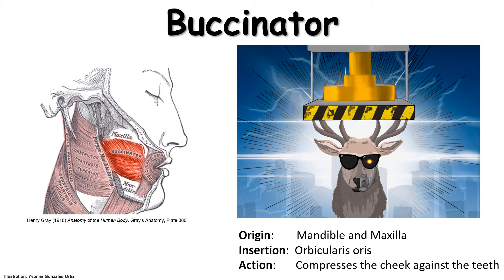So again, the origin is the maxilla and the mandible of the buccinator, and the insertion point is this aura — the orbicularis oris.